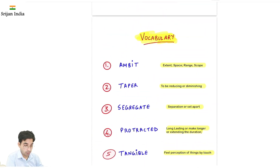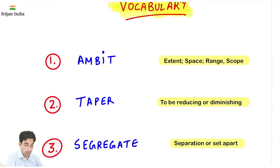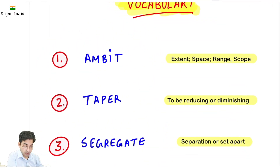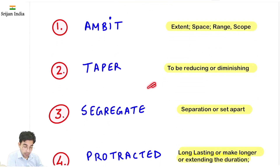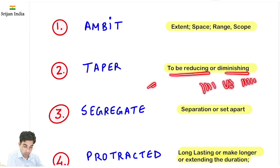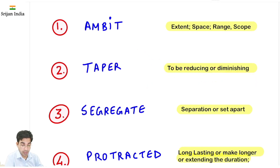Aaj ke vocabulary: 'Ambit' — ka matlab hai scope, range, extent. 'Taper' — jaise abhi US Central Bank federal tapering ho rahi thi — matlab to be reducing or diminishing, dheere dheere kam ho raha hai. That is tapering.